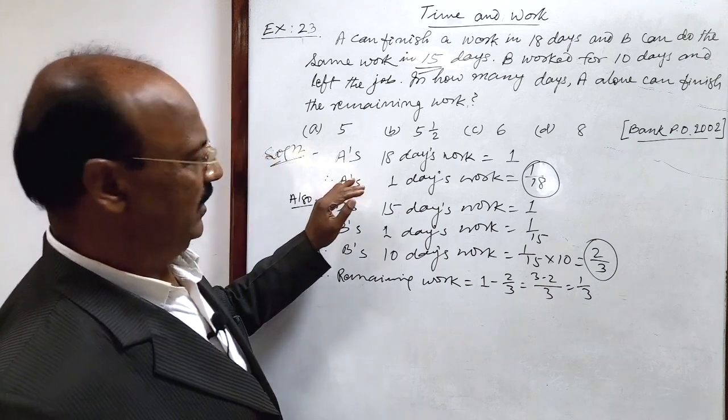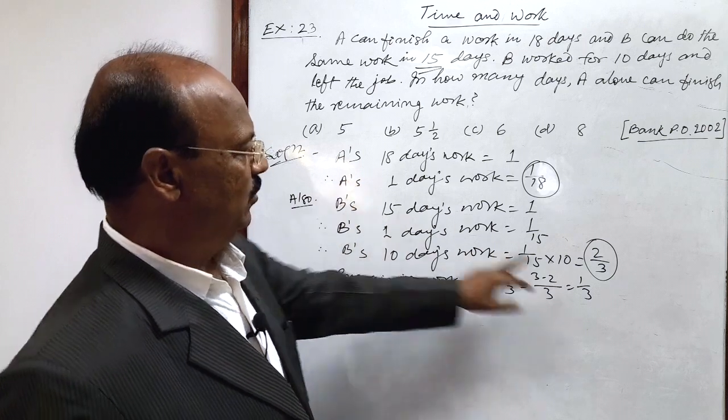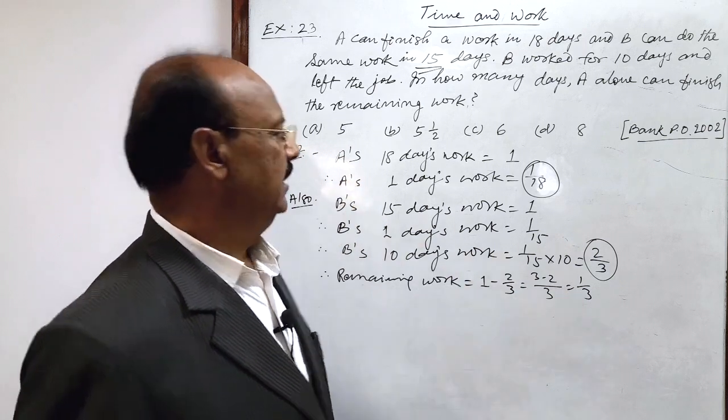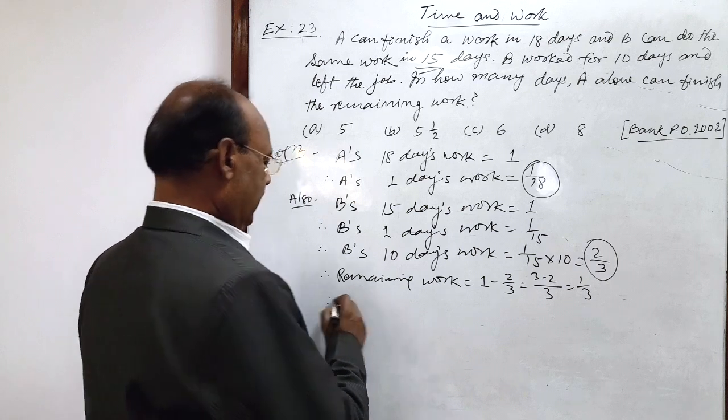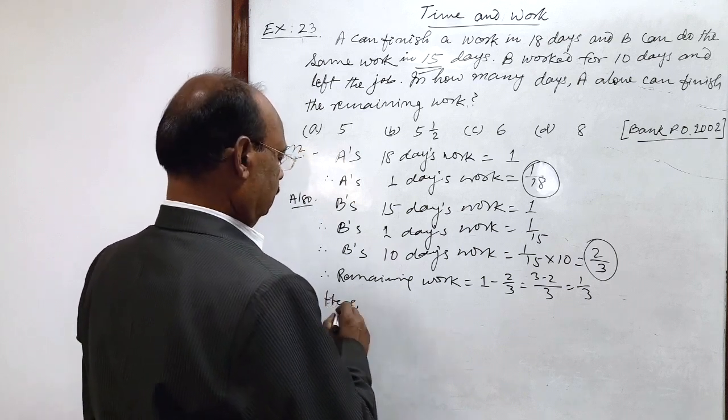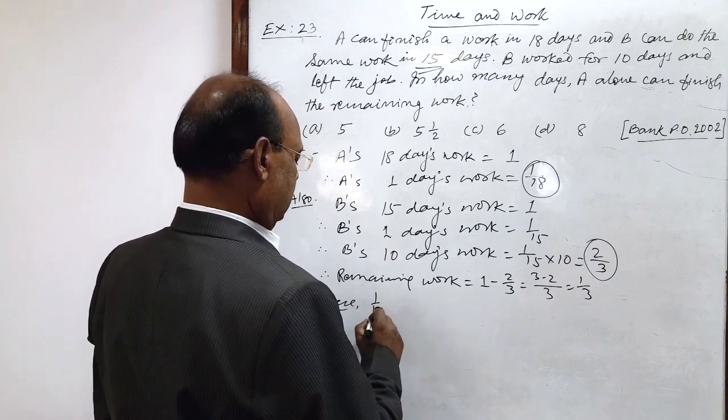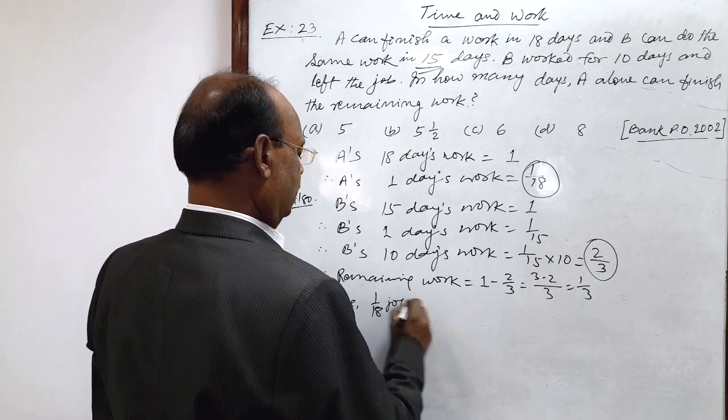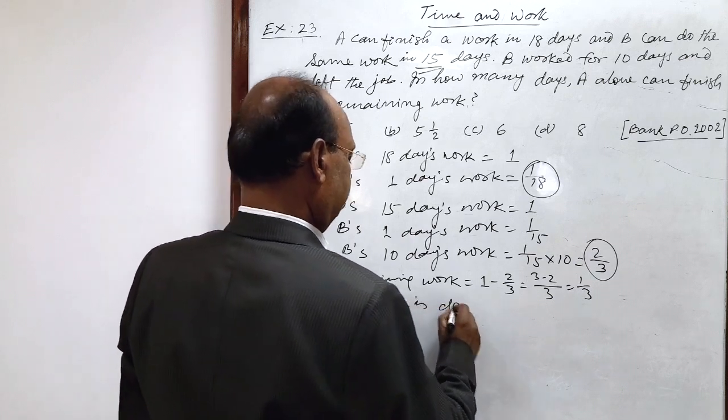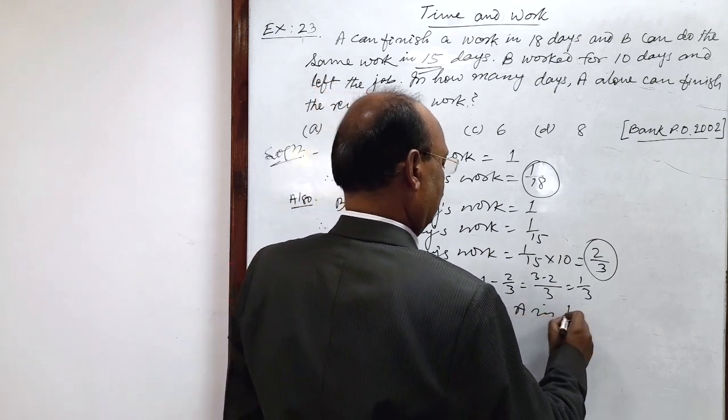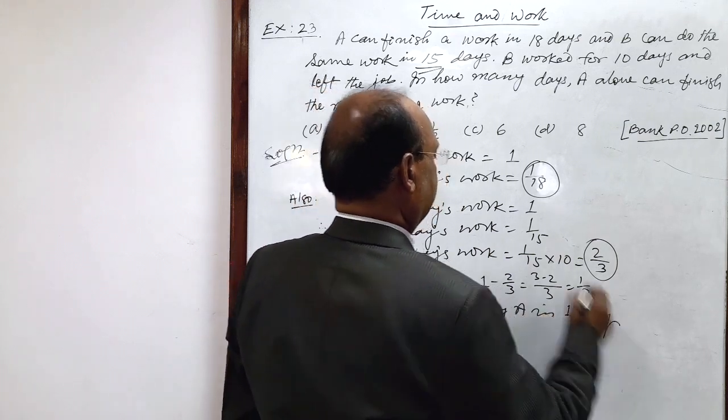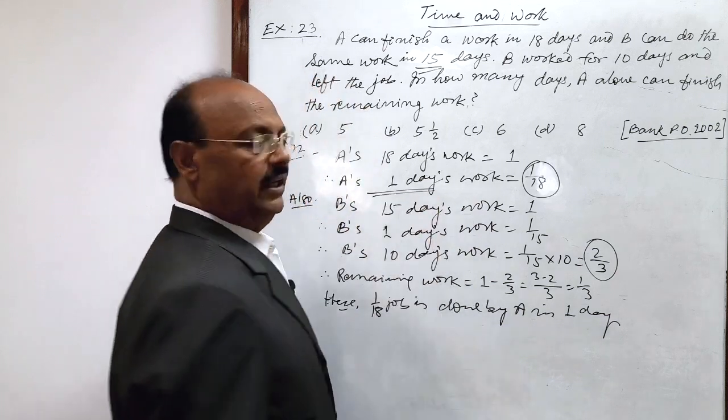We have to find out number of days required by A for completing 1 by 3 job. You see here, 1 by 18 job is done by A in 1 day. This is 1 day job done by A.